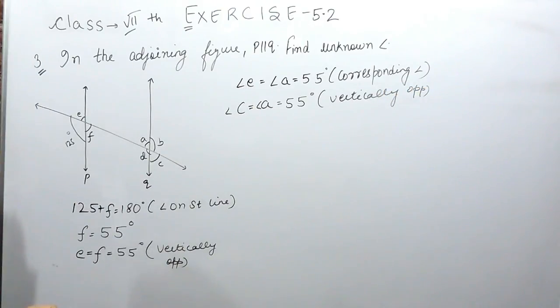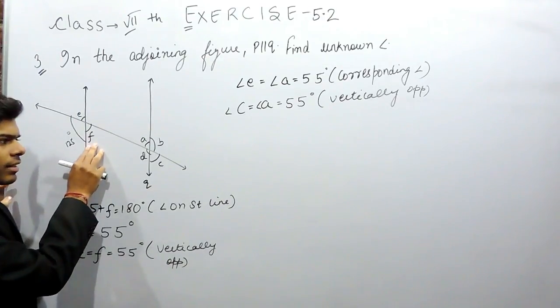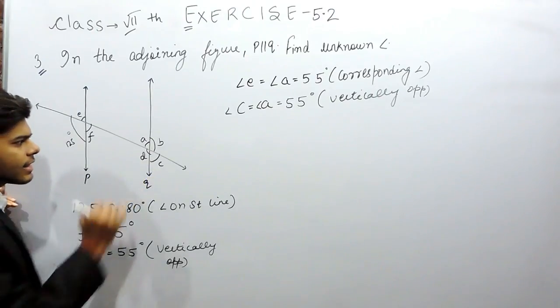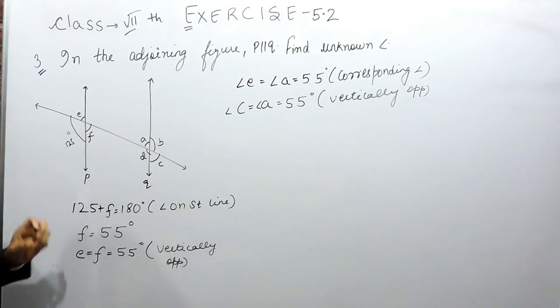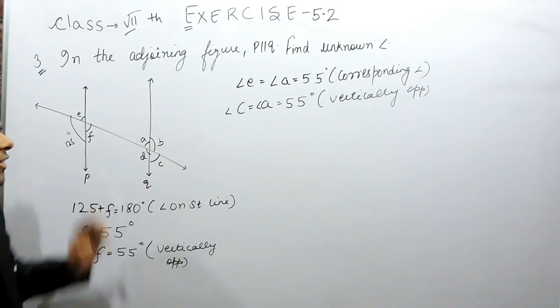Or if you don't know what vertically opposite angles are, then what you can do is, you know this F, this is 55 degrees, and this F and this C will make corresponding pairs. So C will also be equal to 55 degrees.